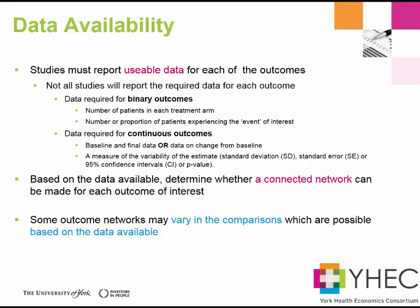Once you have established that it is appropriate to combine trials, the next thing to check is which studies report sufficient data for each outcome. For binary outcomes you need the number of patients in each treatment arm and the proportion who experience the event of interest. For continuous outcomes you need a point estimate — either baseline and final visit data or change from baseline — along with an estimate of the variance. For survival outcomes you need a hazard ratio plus confidence intervals or a p-value. The network for each outcome may vary depending on data availability.